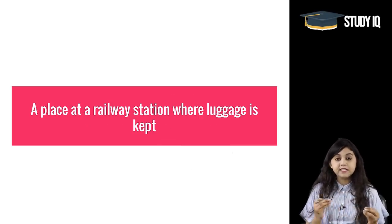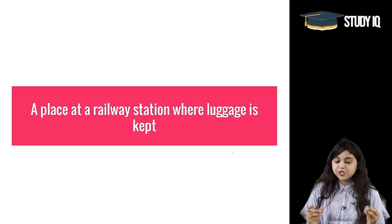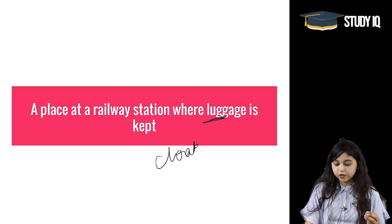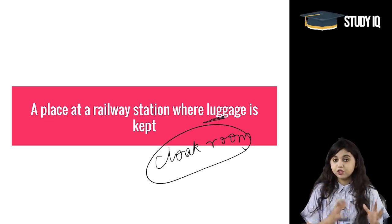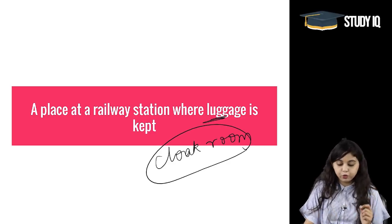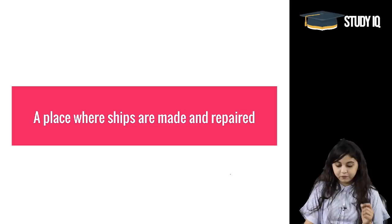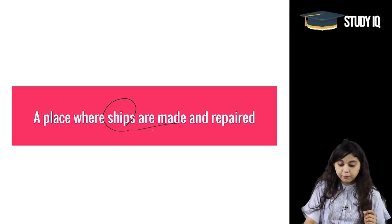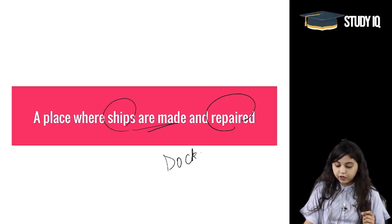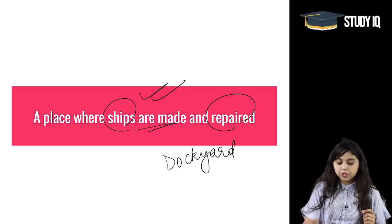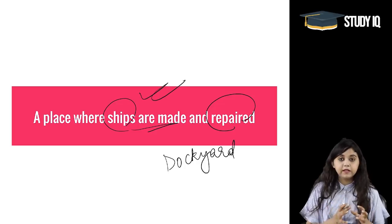A place at a railway station where luggage is kept is called a 'cloakroom.' So the place at a railway station for storing luggage is called a cloakroom. A place where ships are made and repaired is called a 'dockyard.'